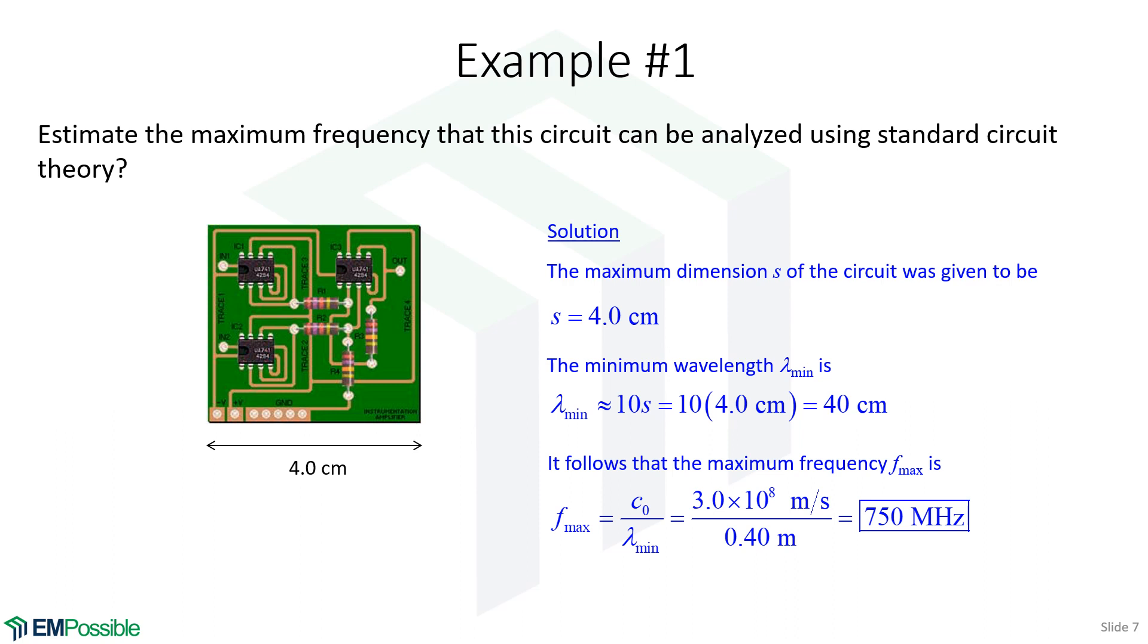At this point, we can solve for the maximum frequency from that minimum wavelength. Speed of light divided by the minimum wavelength gives us the maximum frequency, so 750 megahertz. If this circuit operates at 750 megahertz and below, we can apply ordinary circuit theory to analyze and design it. For frequencies above that, we would have to do other things.